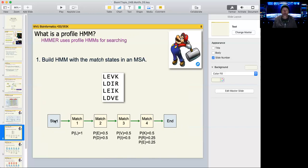But essentially, there's a start state. You can think of these as states, these boxes here. There's a start state. There's a match one, two, three, four. We have four positions in our minor, small, multiple sequence alignment.